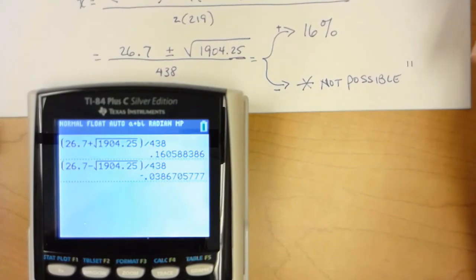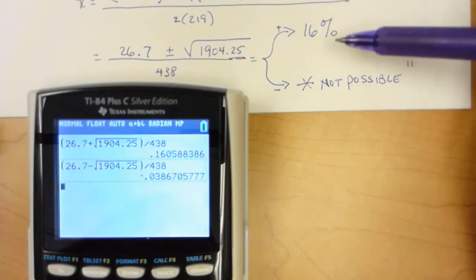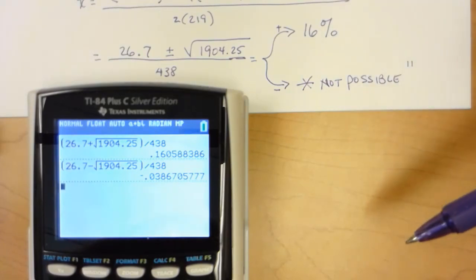So if an individual has that 3 nanograms per milliliter of leptin, determine the percentage of body fat. The percentage of body fat would be 16 percent. And that's it for this video.